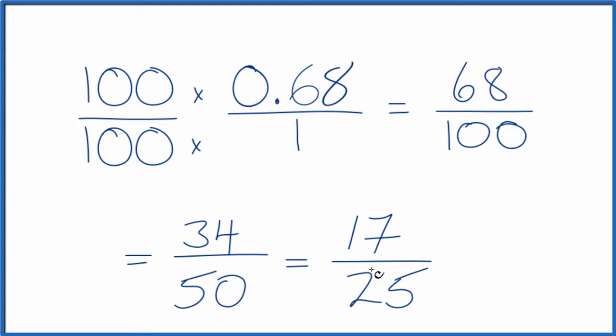If you divide 17 by 25 or 34 by 50 or 68 by 100, you get 0.68. This is Dr. B and thanks for watching.